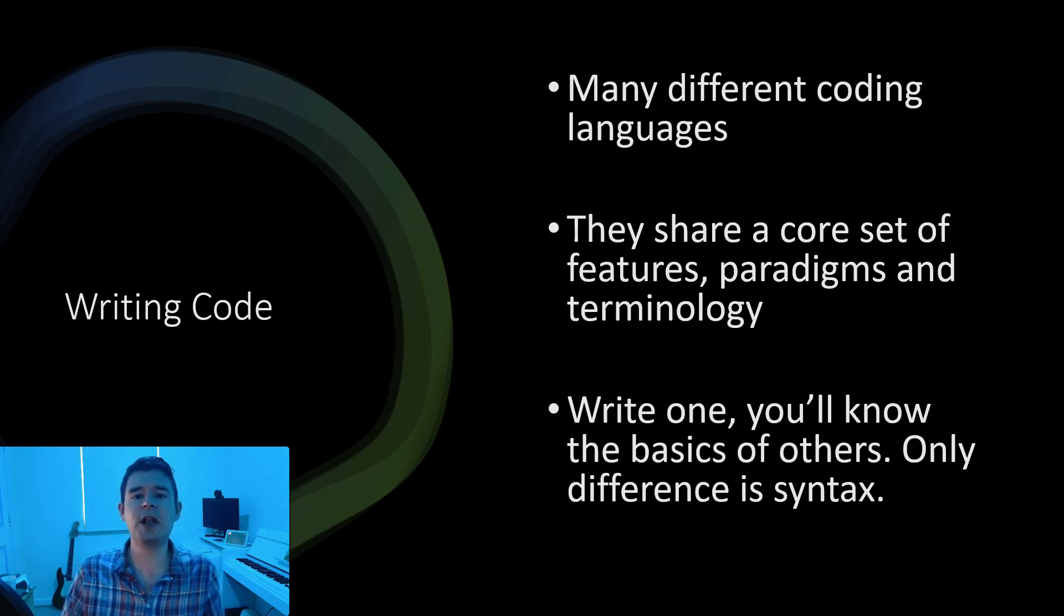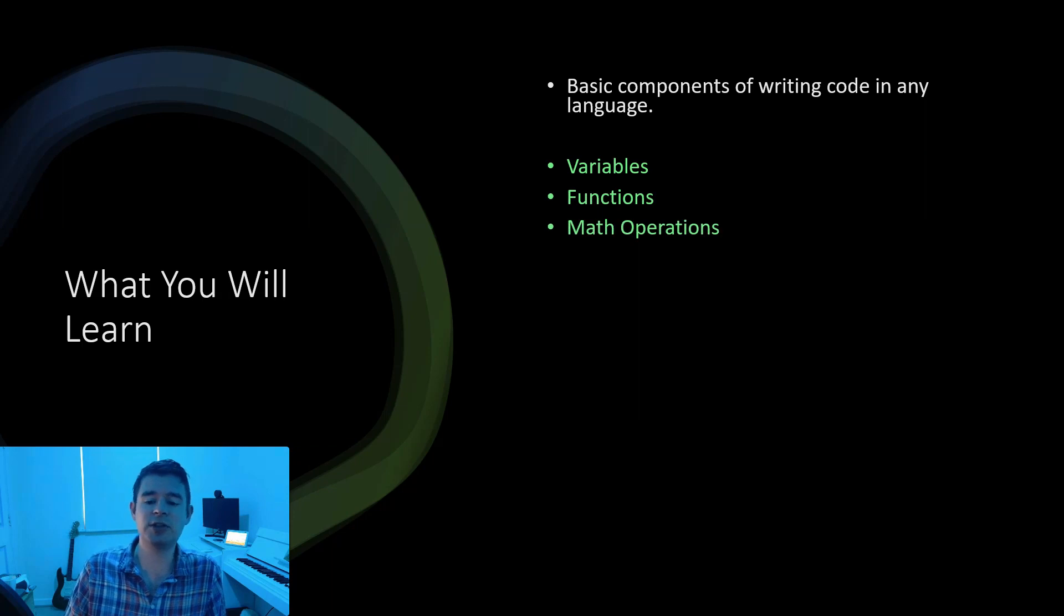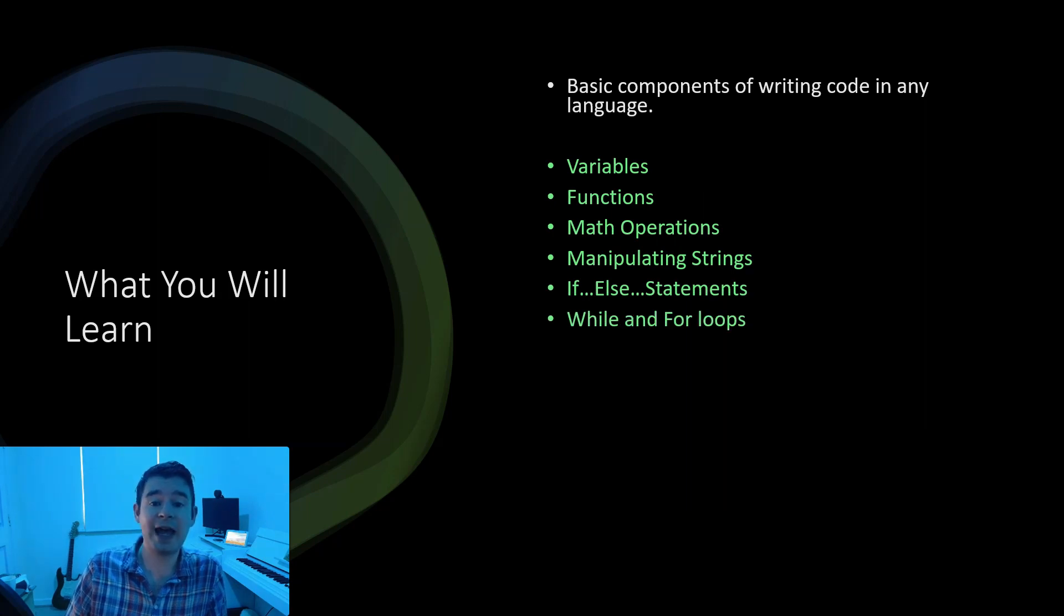So in this course you're going to learn the basic components of writing code in any language. Just to give you an example of the types of features that almost every coding language supports, at least what's known as the Turing complete coding language: we have variables, functions, math operations, manipulating strings, if-else statements, while and for loops, arrays, objects, classes, and something we'll refer to as modules.